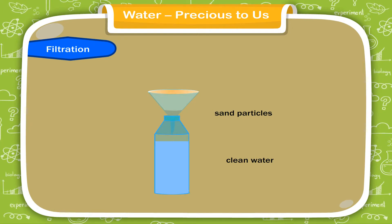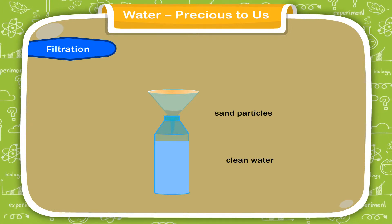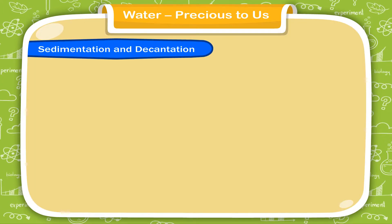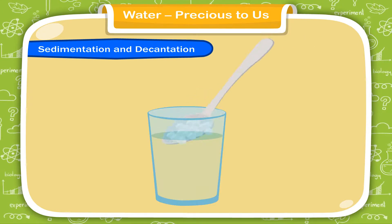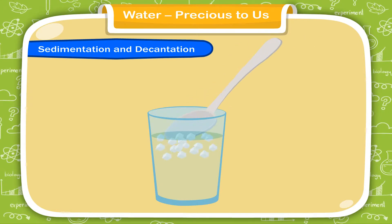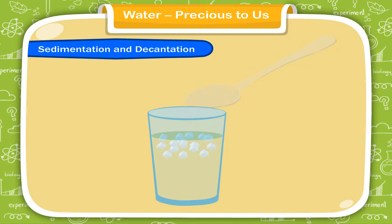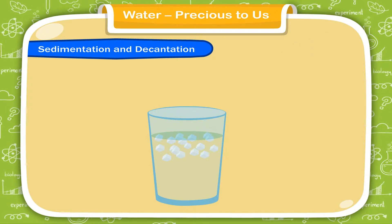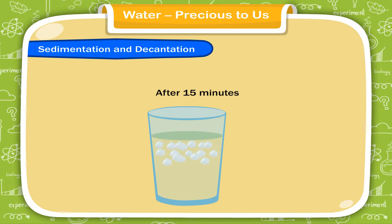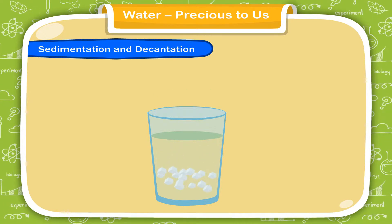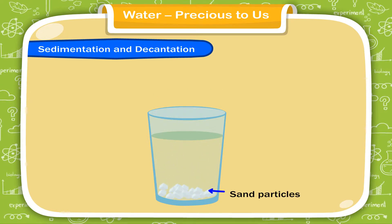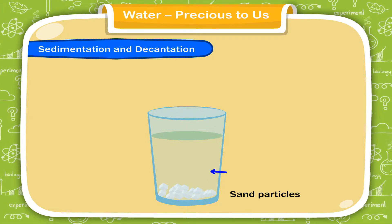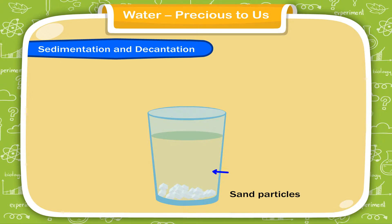This process of pouring water through a filter paper — that allows water to pass but not solid particles — is called filtration. Sedimentation and decantation: add some sand to a glass of water and stir it. Leave it for 15 minutes. You will see the sand particles settled at the bottom of the glass, and the water above them is clean.